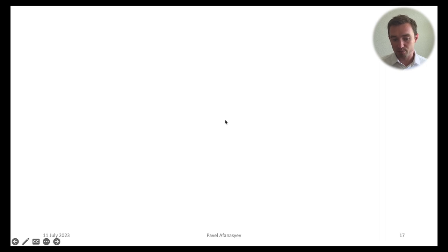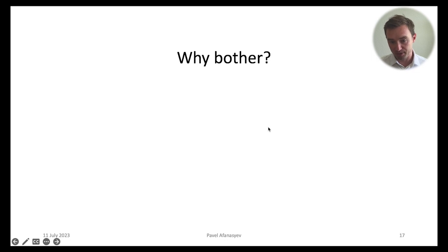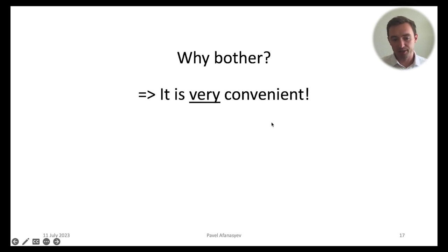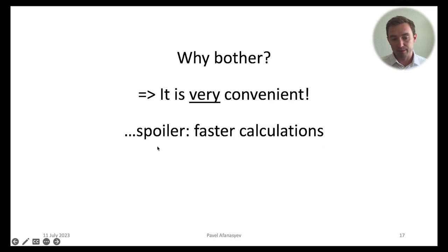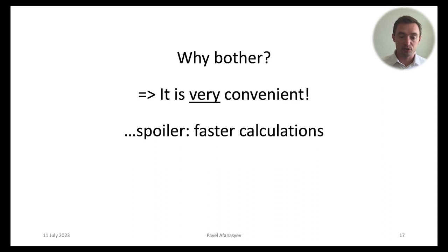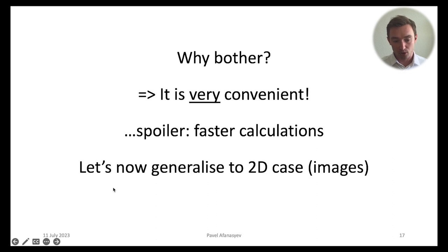You might ask, why would we bother? Why decompose any function this way? The answer is that it's very convenient. You will see that you can compute certain things much faster using Fourier Transforms than if you had to compute them in real space. So let's now generalize our approach for the 2D case and talk about images.